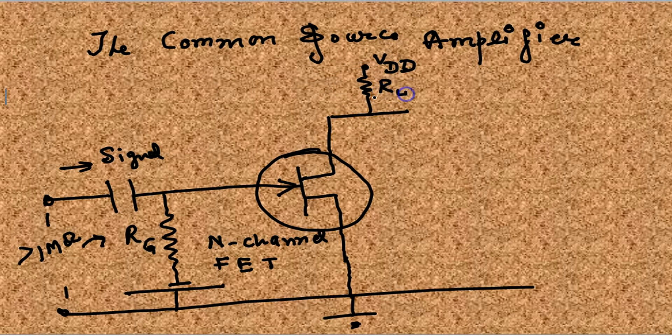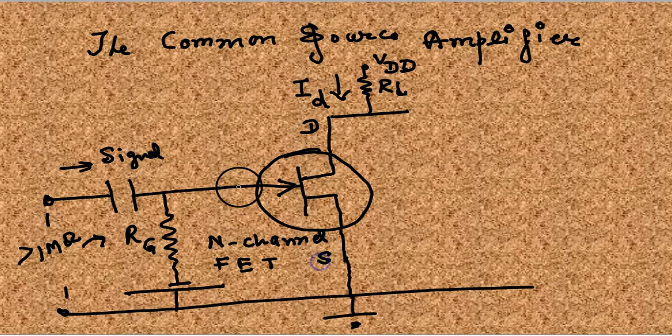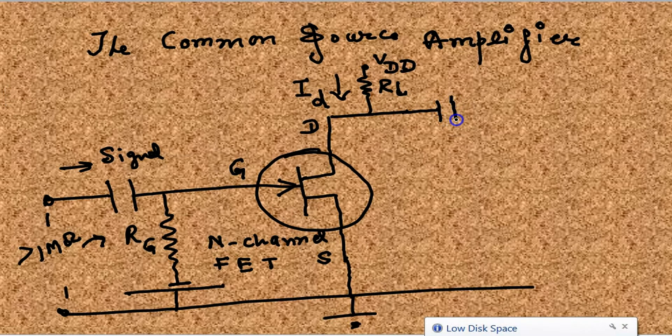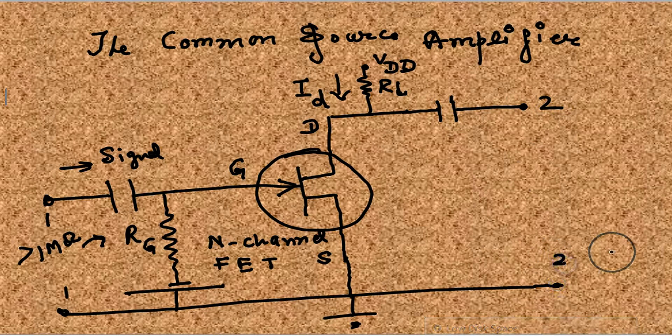The drain is given a supply VDD through RL. The current ID flows as conventional current from drain to source. This capacitor is from which the amplified signal exits.